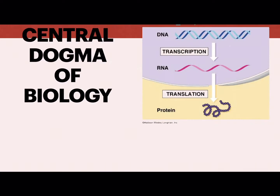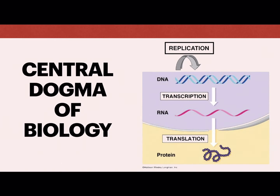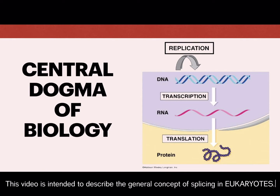If you've taken at least one biology class, you ought to know the central dogma of biology, which describes the general idea of how our blueprints come to life and can be summed up into three major steps: replication, transcription, and translation. This video will specifically focus on splicing, which generally occurs in the nucleus following transcription.